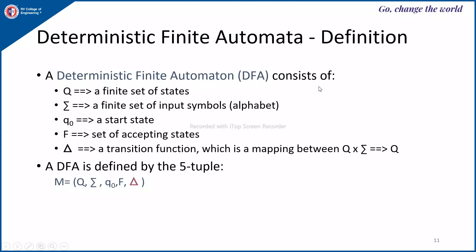A DFA is a finite automata which consists of 5 parameters, and the machine M is given by Q, sigma, delta, Q0, F — where Q is a finite non-empty set of states, sigma is a finite set of input symbols called the alphabet, Q0 is the start state belonging to Q, F is the set of accepting or final states (a subset of Q), and delta is a transition function mapping Q cross sigma to Q.